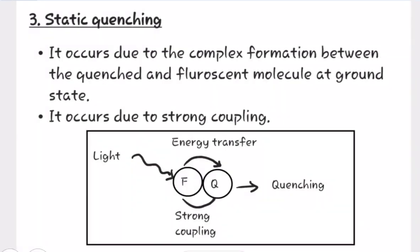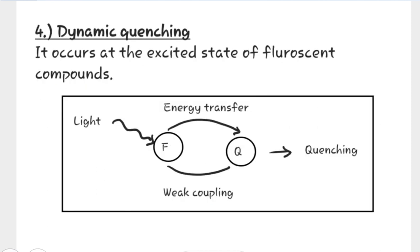Now let us see what is static quenching. It occurs due to complex formation between the quencher and the fluorescent molecule at the ground state. It occurs due to strong coupling. This diagram represents static quenching — the fluorescent substance forms a complex with the quencher Q, causing quenching so that fluorescent radiation cannot be emitted.